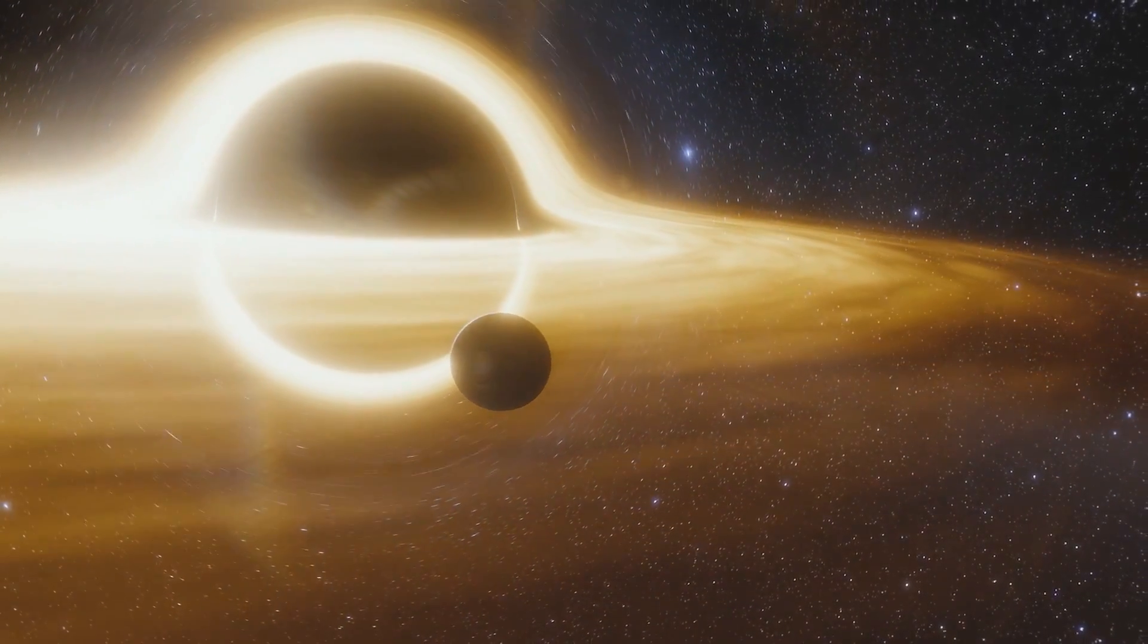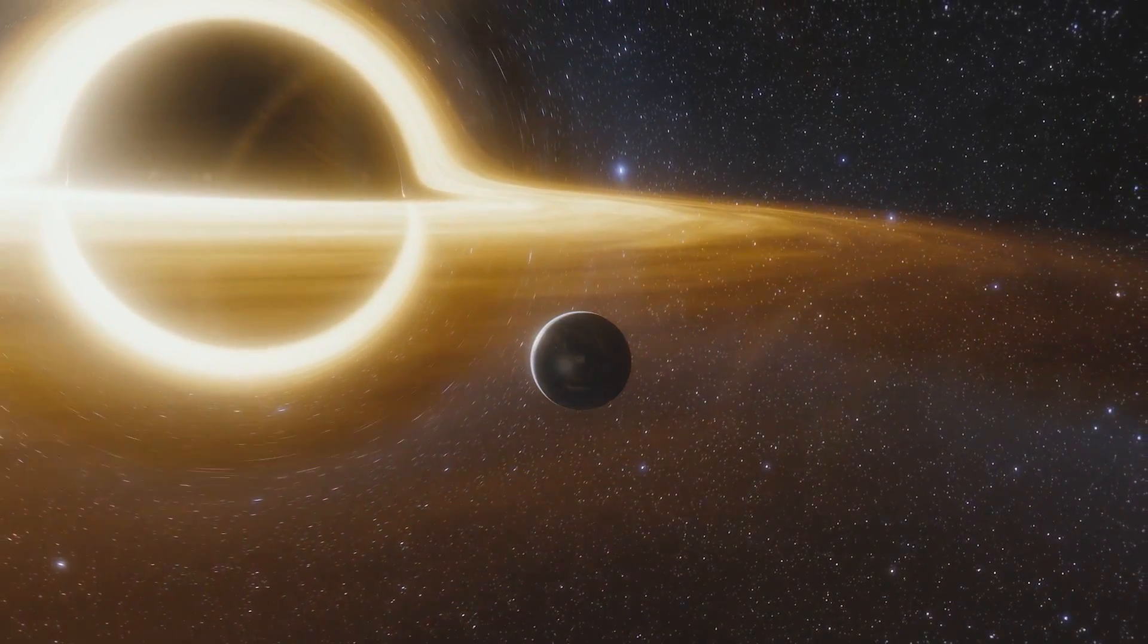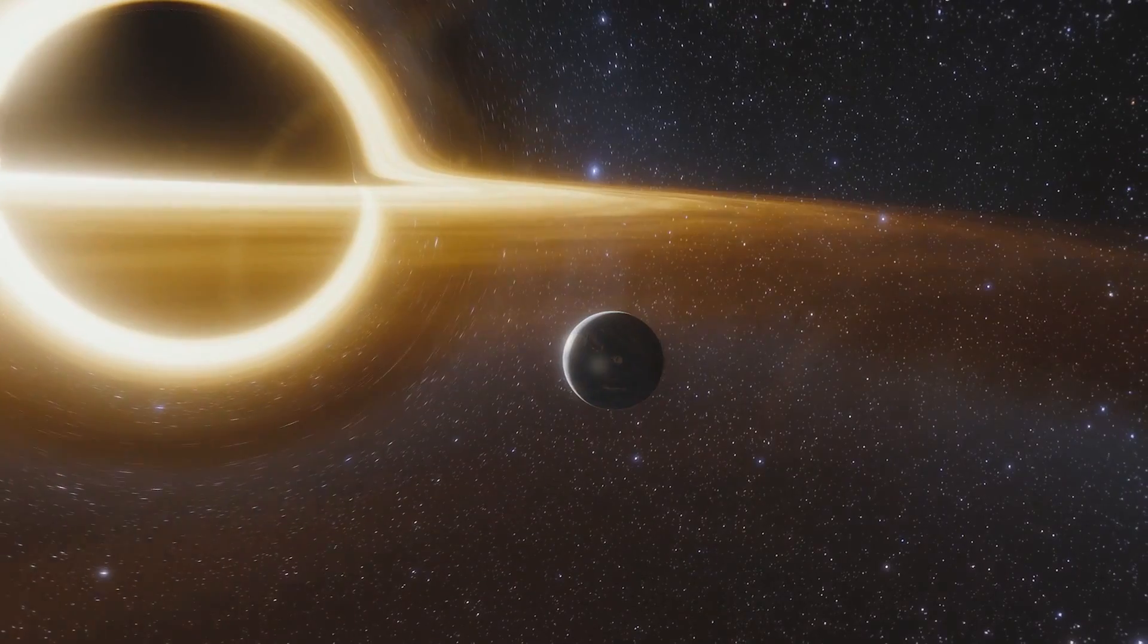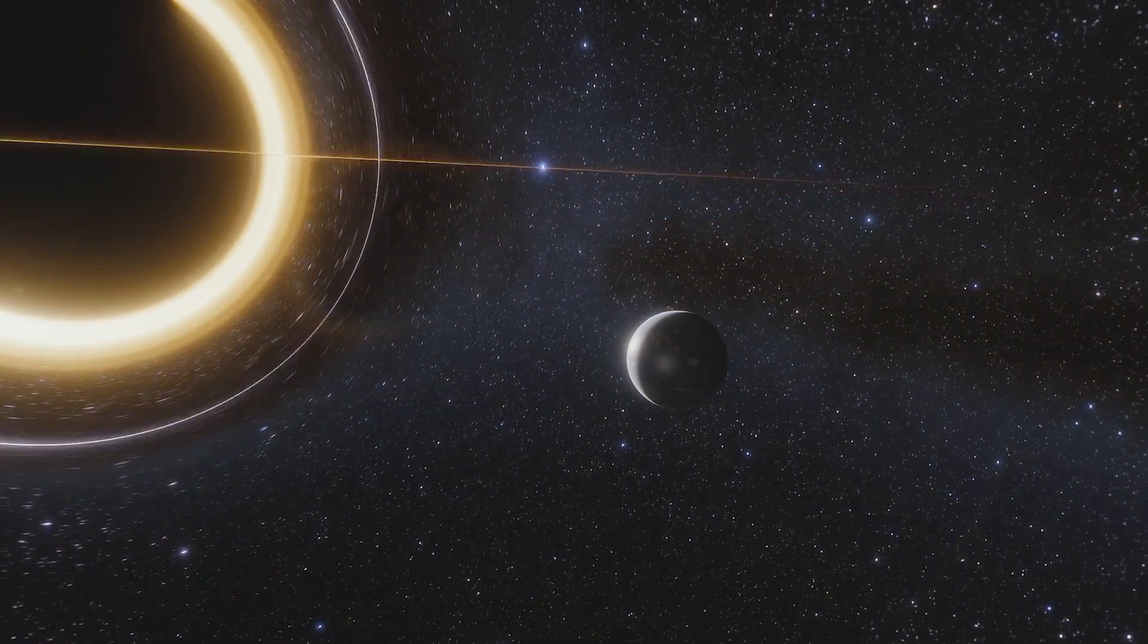According to published research, more than 10,000 planets are possible around a supermassive black hole. For such a planet, the accretion disk would be as bright in the sky as Earth's sun.